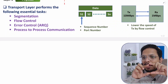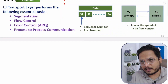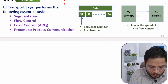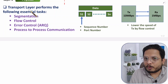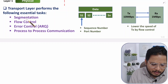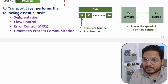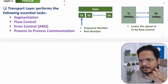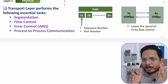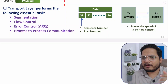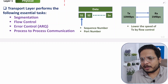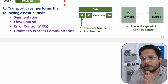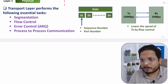After decapsulation, the data is passed to the appropriate process and appears on your screen. So process-to-process communication is established at the transport layer. In general, these four functions — segmentation, flow control, error control, and process-to-process communication — are very essential at the transport layer. We will discuss all four in great detail in upcoming videos. Thank you for watching.